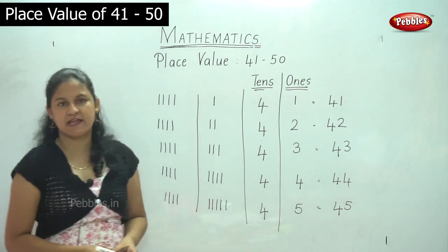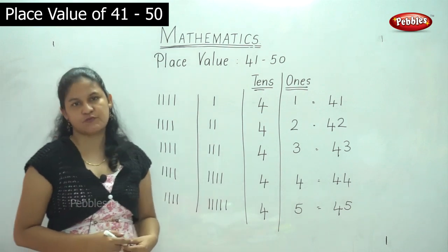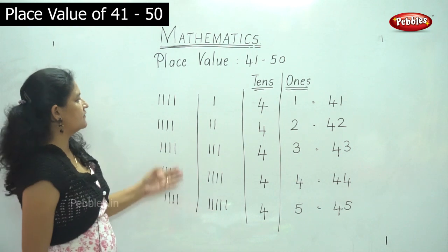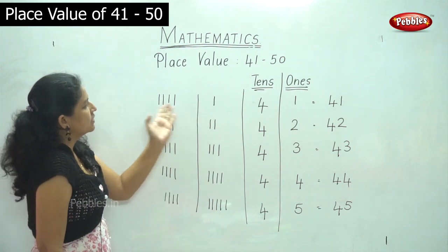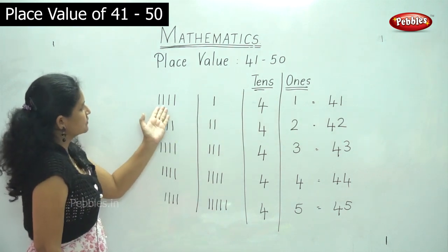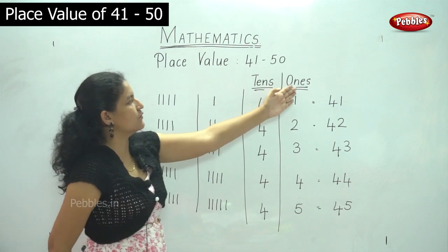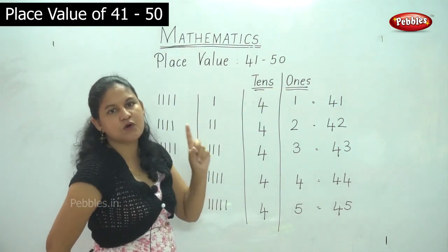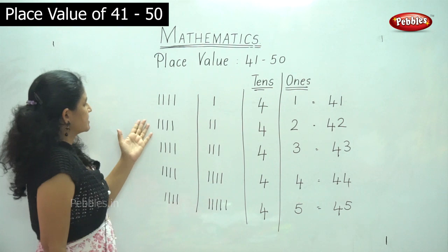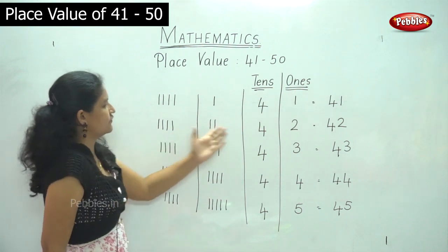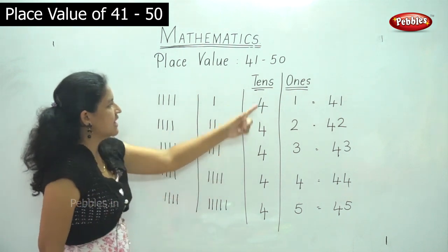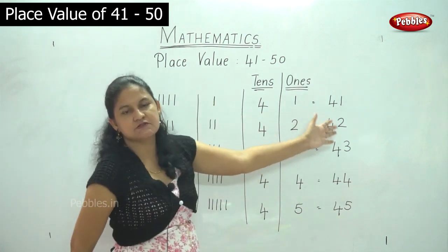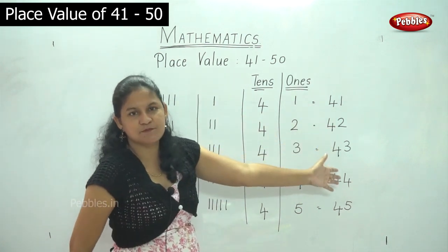So we are going to see the numbers again — the place value for the numbers 41 to 45. In the tens place I have 4 tens and in the ones house I have 1. So that gives me the number 41. Next I have 4 tens and in the ones place I have 2, which gives me 42.